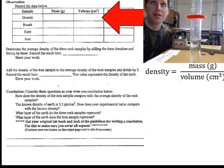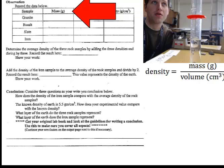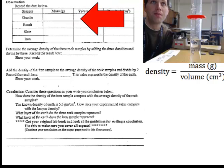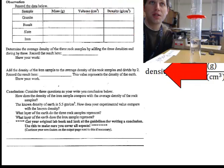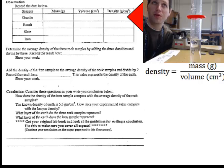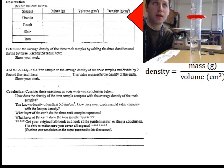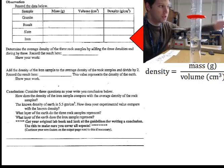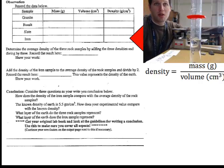Once you've recorded your mass and your volume, using the equation density equals mass divided by volume, you can determine the density of your rock sample and record it in the data table. For all three rocks the procedure is the same.